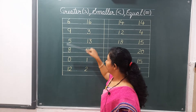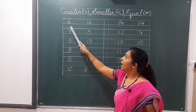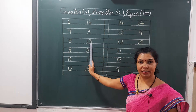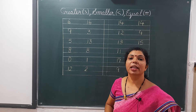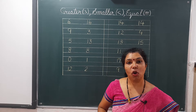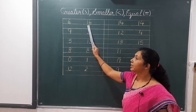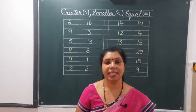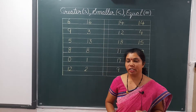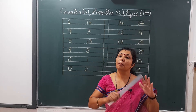For example, so many numbers have been given here. And we have to take two numbers at a time for comparison. We need to see which is greater or which is smaller. One thing to note: which number comes after in counting will be greater. Jo baad mein aayega, woh bada hoga.